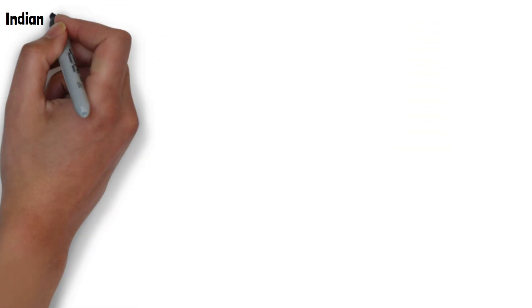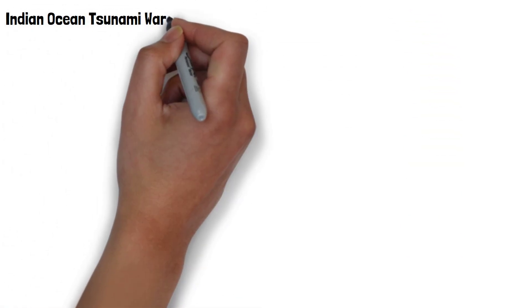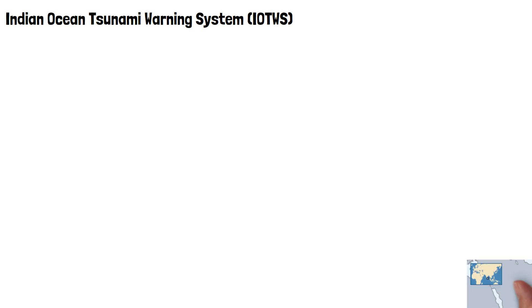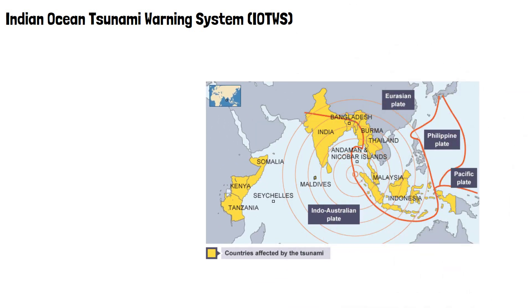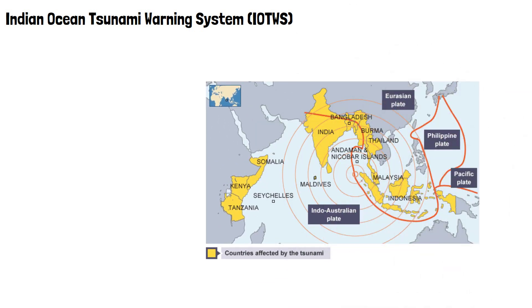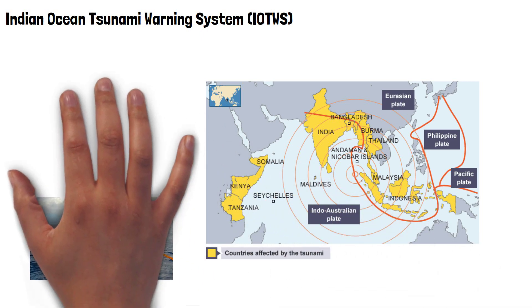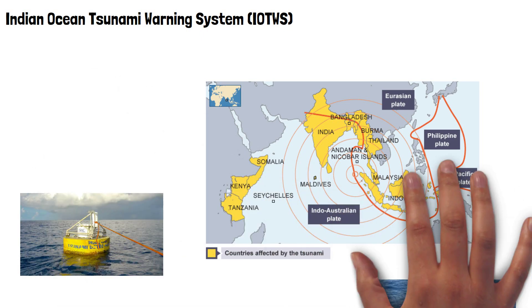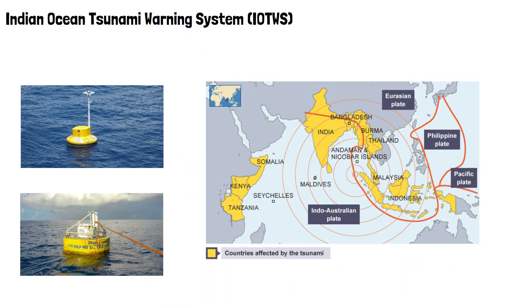The Indian Ocean tsunami warning system, abbreviated to IOTWS, uses technical components and collaboration between various countries to detect, monitor, and issue warnings for potential tsunamis. Let's have a look at how it does this.